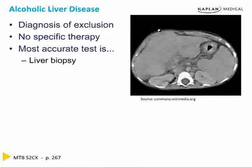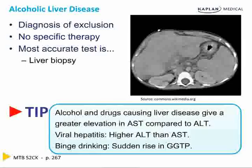Alcoholic liver disease is a diagnosis of exclusion with no specific therapy. The most accurate test is a liver biopsy. Remember, alcohol and drugs causing liver disease give a greater elevation in AST compared to ALT.